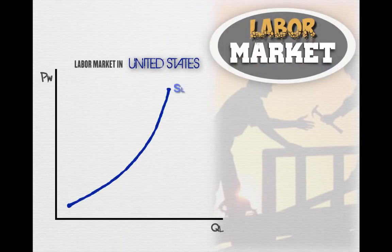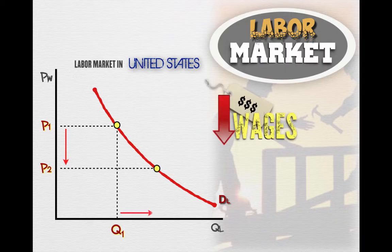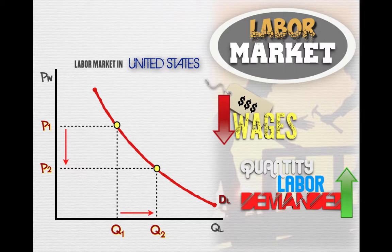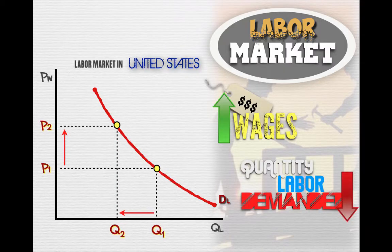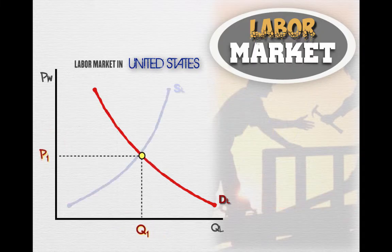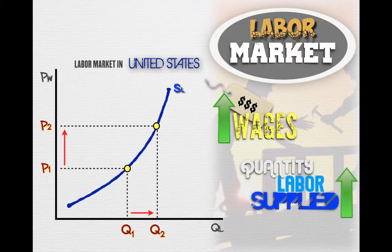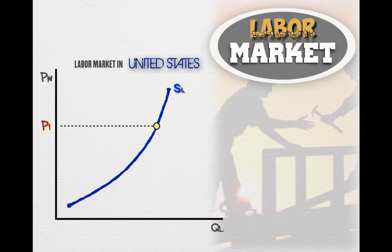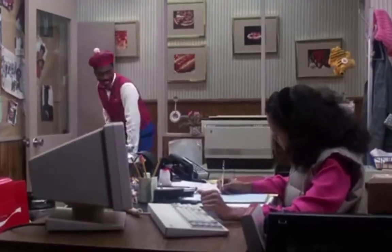Let's use the American labor market as an example. To produce goods and services, firms demand labor. If wages fall from P1 to P2, the quantity of labor demanded will increase because firms can acquire more workers at a cheaper price. But if wages increase from P1 to P2, the quantity of labor demanded decreases because each worker is more expensive. In the labor market, consumers become workers and supply their labor. If wages rise from P1 to P2, workers will be more likely to supply their labor, so the quantity supplied increases. But if wages fall, workers lose the incentive to work in as great a quantity — similar to how workers in low-wage jobs are less motivated to go to work.